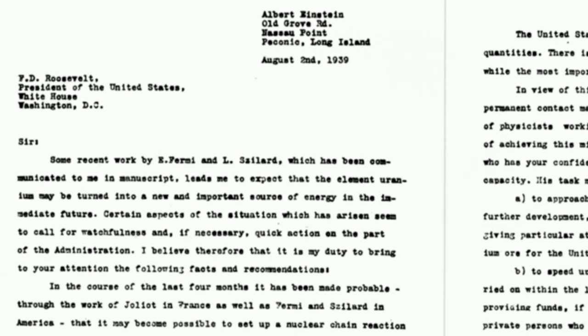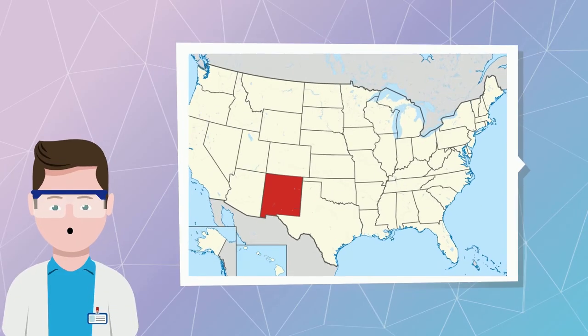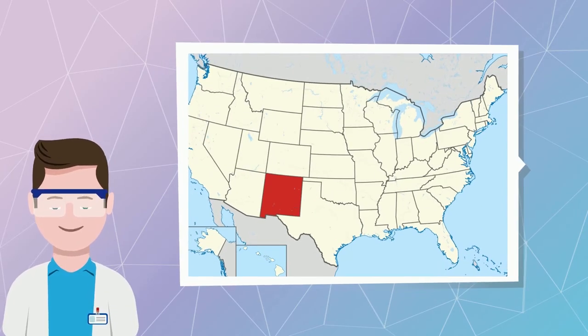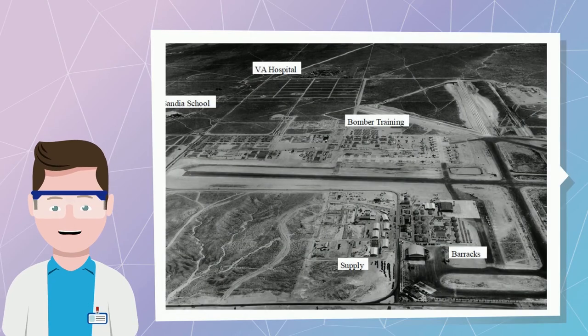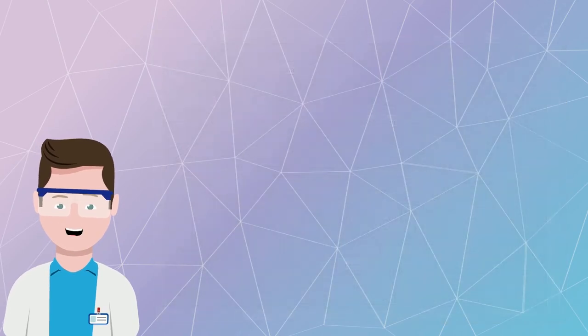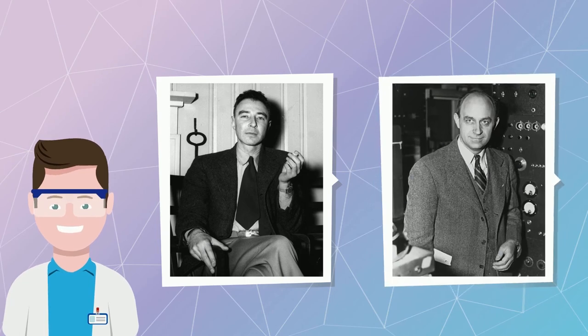This event can be considered the origin of the Manhattan Project. In 1942 in New Mexico, USA, the American Atomic Center, Los Alamos lab, was created led by Robert Oppenheimer. The physicist Enrico Fermi was also an important mind in this project.